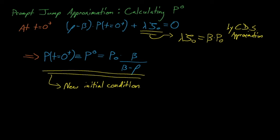This term makes sense when we think about it. Increasing the value of rho will decrease the value of the denominator and thus increase our adjusted initial power. This happens because increasing rho moves our transient closer and closer towards the prompt supercritical regime, where rho is equal to 1. Being closer to the prompt supercritical regime means we have increased prompt neutron multiplication, which thus increases our adjusted initial power.